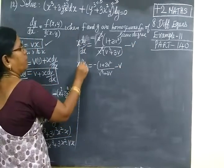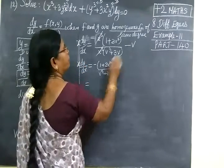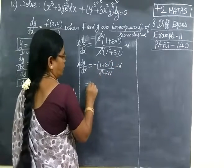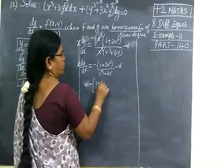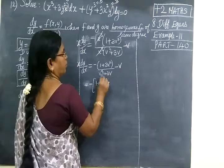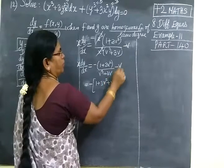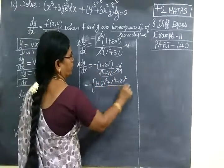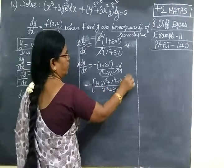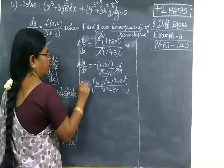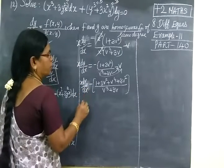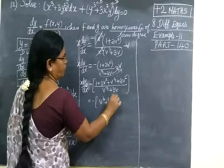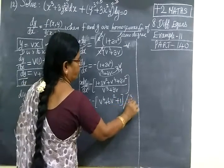Now you take the LCM. Taking minus common and multiplying: 1 plus 3v squared times v squared plus 3v combined gives the numerator minus v power 4 plus 6v squared plus 1, divided by v squared plus 3v. So x into dv by dx equal to minus v power 4 plus 6v squared plus 1, divided by v squared plus 3v.